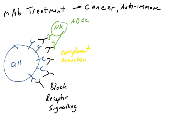Another way that antibodies work to target disease is they can block receptor signaling. If the proteins on the surface of the cell are receptors — maybe growth factor receptors — and these receptors are essential for the cell to function or to grow, especially in cancer cells, then making an antibody that binds these receptors might stop the signaling in the cell. These antibodies would act as antagonists, and if you antagonize these receptors, the cell may stop growing, possibly triggering cell death or apoptosis.